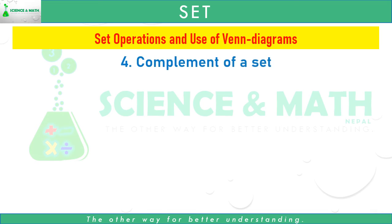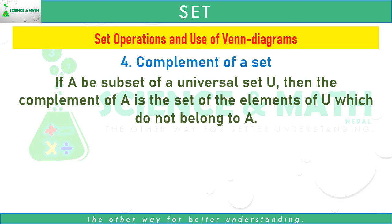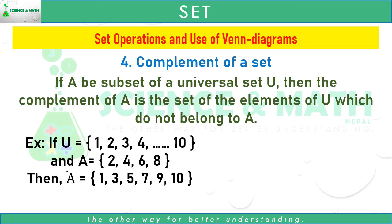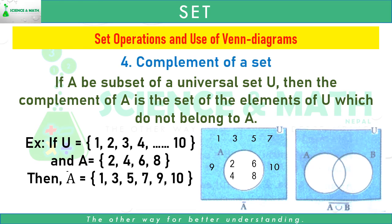Number four: complement of a set. If A is a subset of a universal set U, then the complement of A is the set of elements of U which do not belong to A. For example, if U equals the set of 1, 2, 3, 4, 5, 6, 7, 8, 9, 10 and A equals the set of 2, 4, 6, 8, then A complement equals {1, 3, 5, 7, 9, 10}. The shaded region in light blue shows A complement in the Venn diagram. Another Venn diagram shows A union B complement.